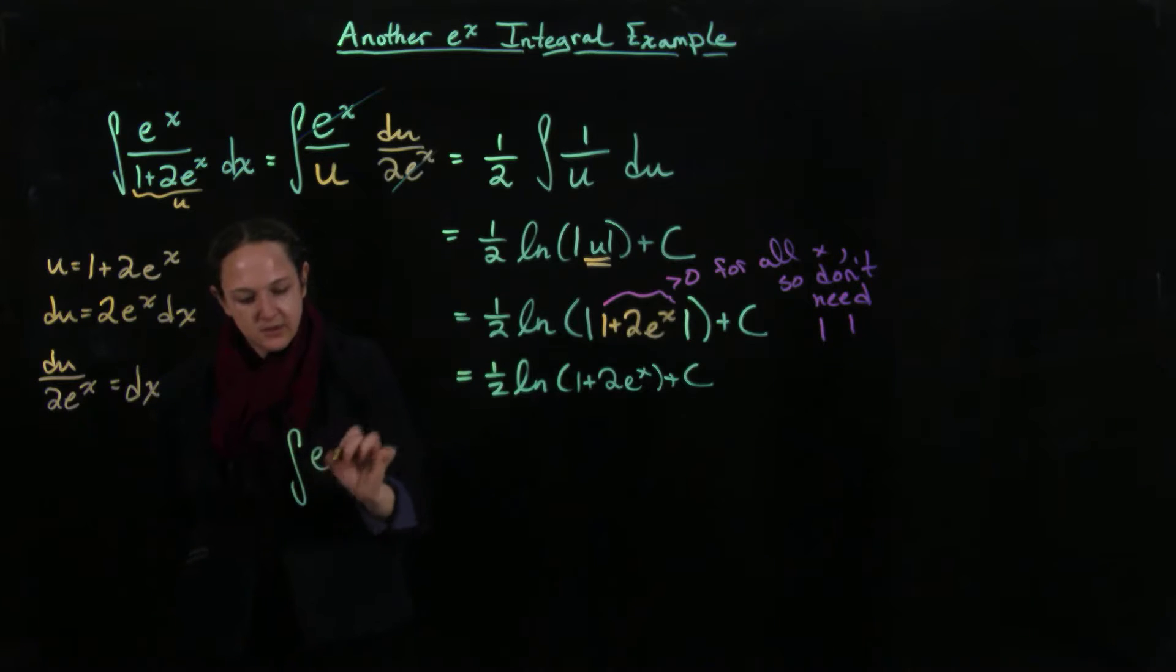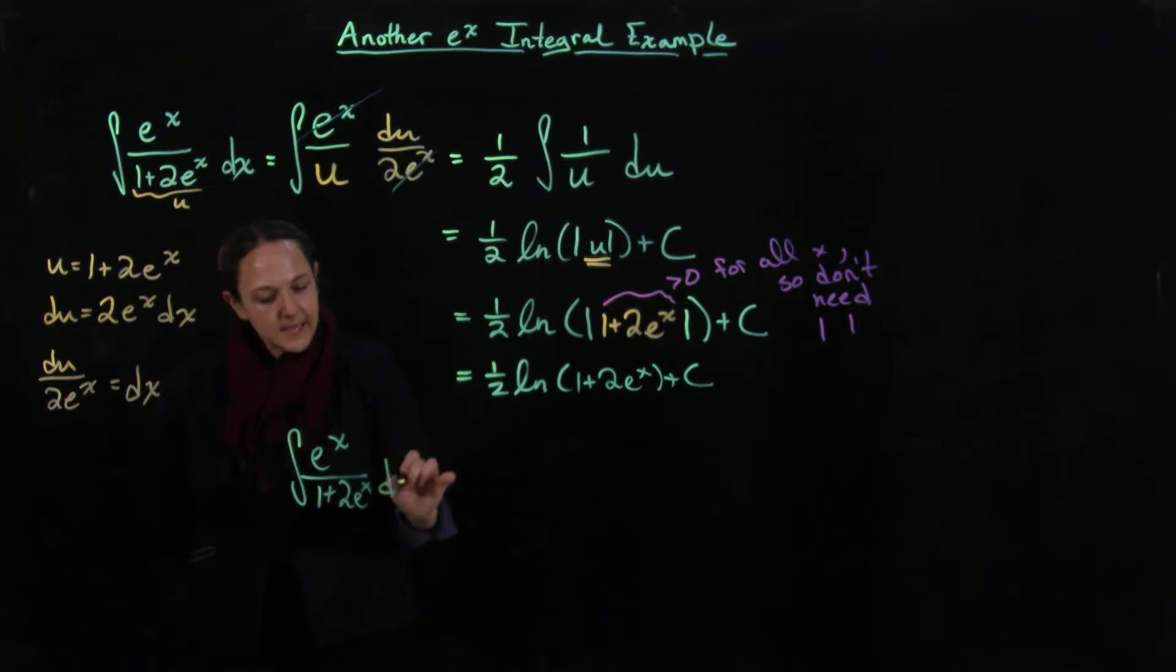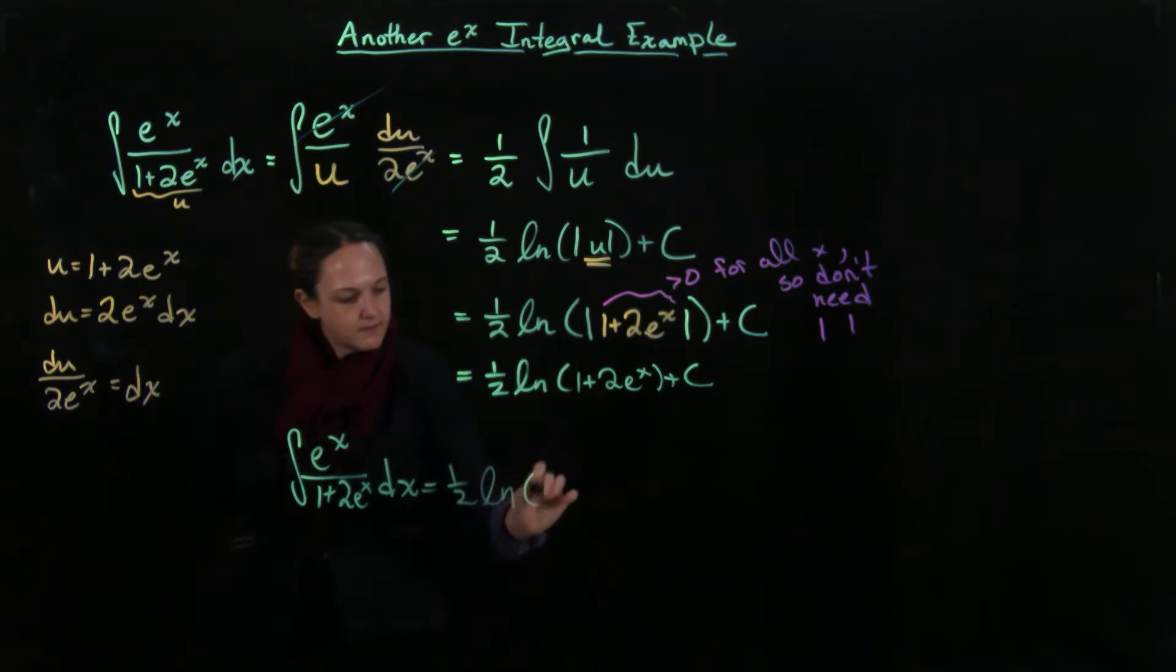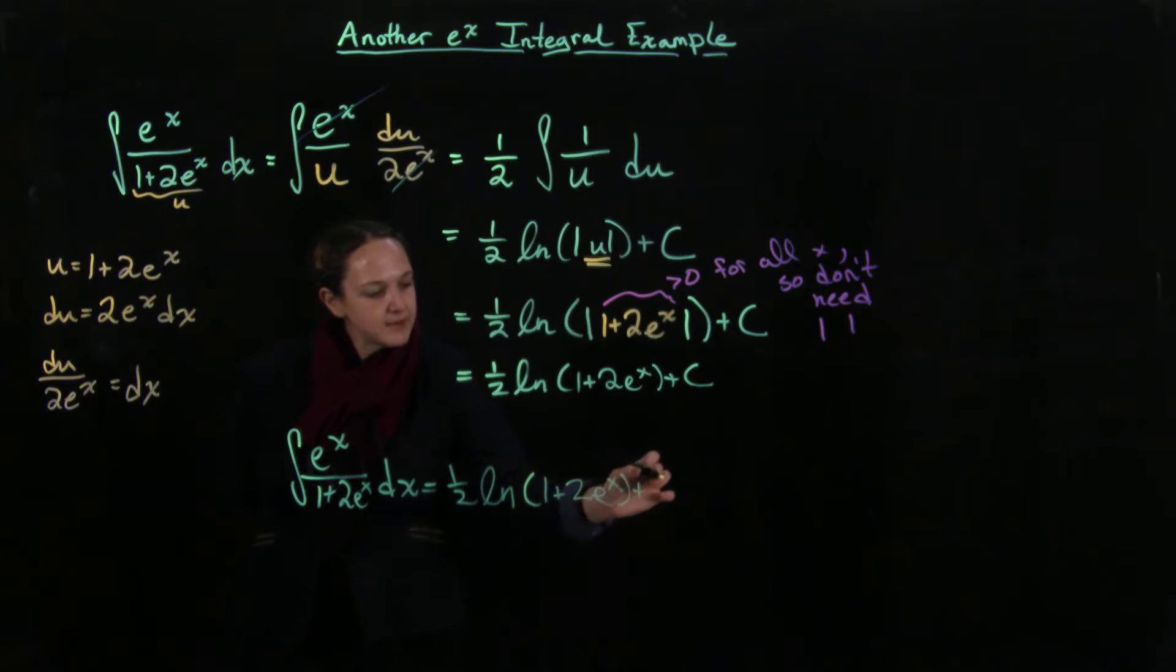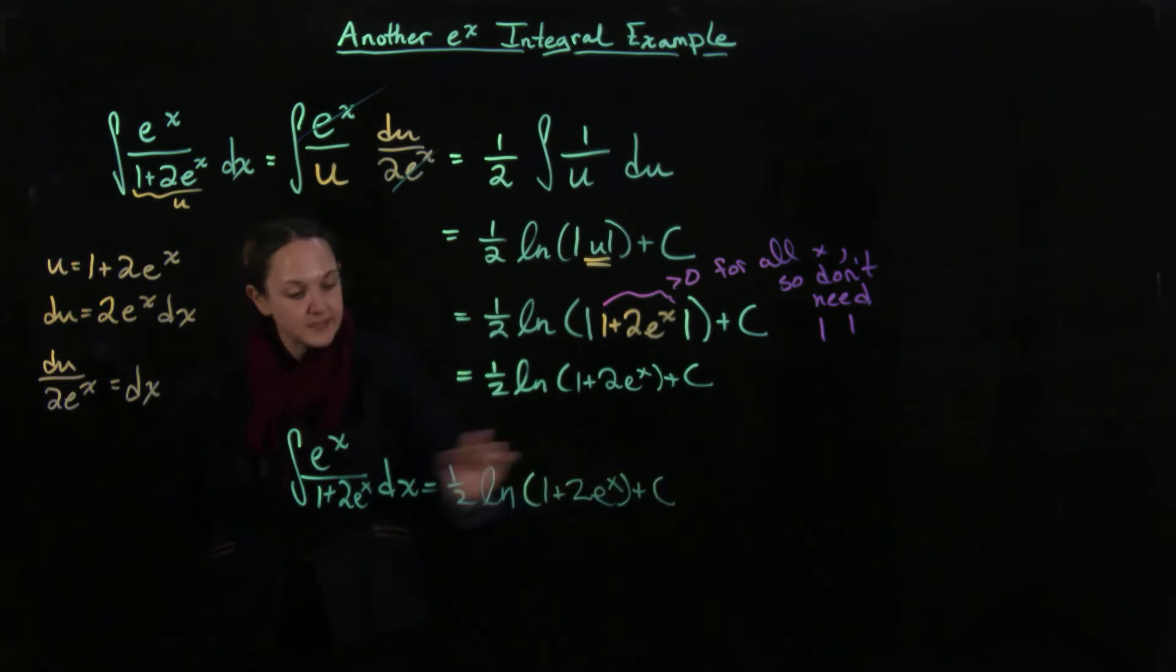And in the end, my answer is the integral of e to the x over 1 plus 2 e to the x dx is going to equal 1 half times the natural log of 1 plus 2 e to the x plus c. And again, we were able to get rid of the absolute values just because this is always positive.